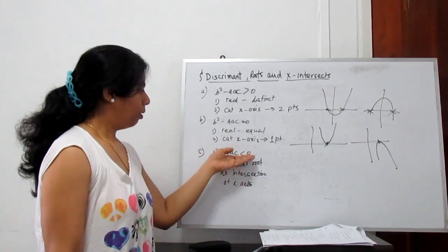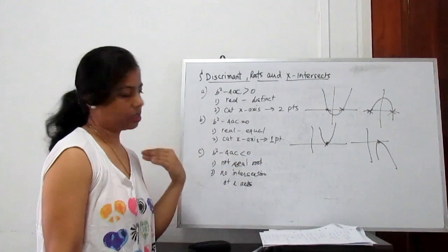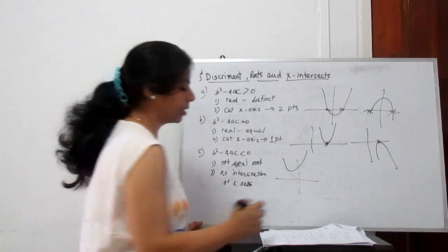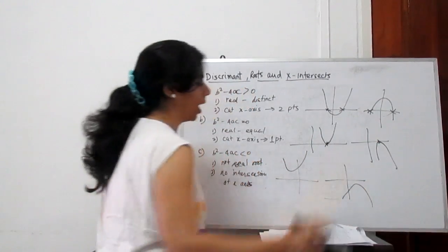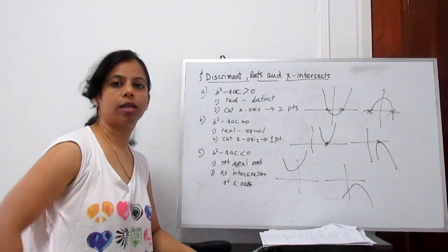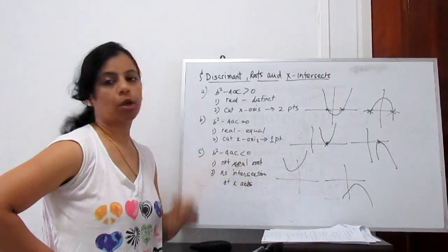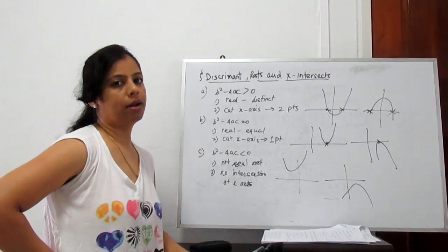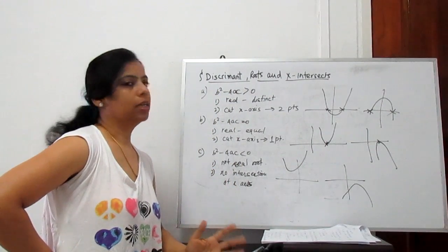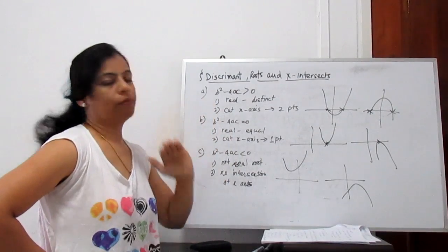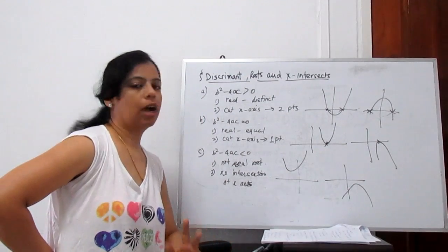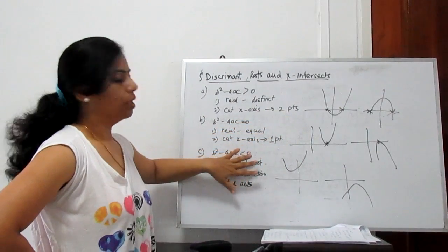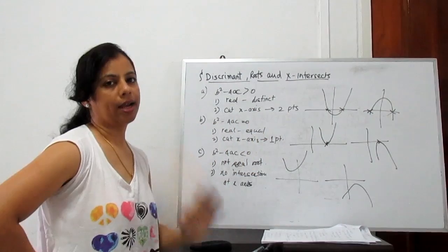If the discriminant is negative, the roots are not real — imaginary — and there is no intersection with the x-axis. The parabola lies entirely above or entirely below the x-axis. To summarize: positive discriminant — cut at two places; zero — cut at one place (tangent); negative — no cut, imaginary roots.